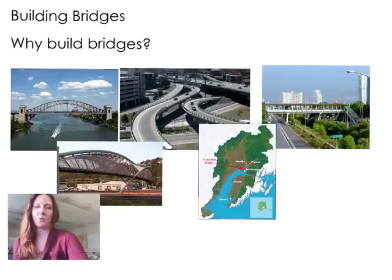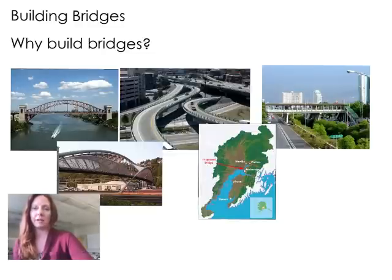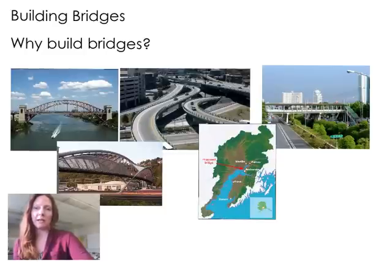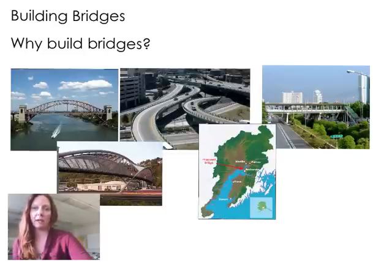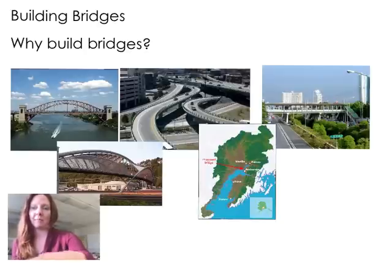The first thing you want to think about when engineering is remember that there's a problem to solve — some sort of problem that needs to be addressed and possibly a solution for that problem. What kind of situations would we be in to propose a bridge? Why would we want a bridge instead of maybe something else? If you look here at some of these pictures you can come up with some ideas.